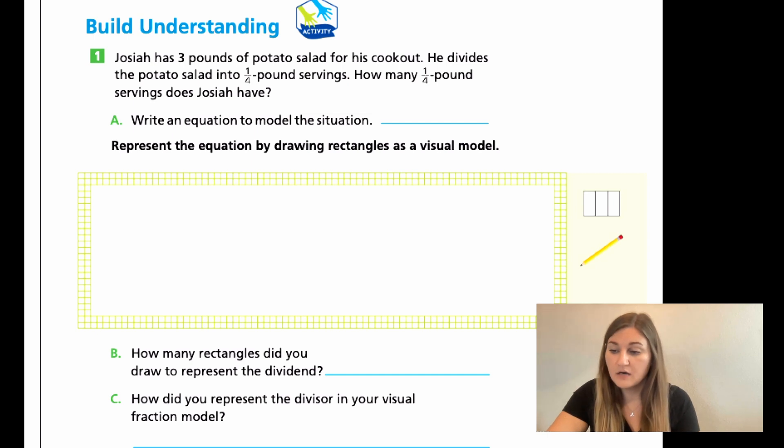So it says write an equation to model the situation. And remember, what number do we start with? We start with our three pounds of potato salad. So that's going to be our first number is that three. Then we're dividing it up into fourth pounds servings. So we have our three divided by a fourth. And we're going to show it the exact same way as we did on number one.